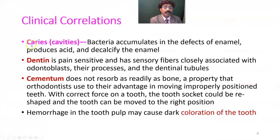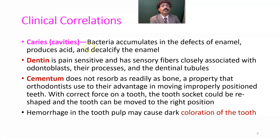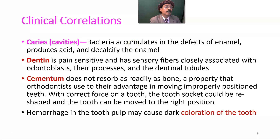Clinical correlation — Caries: Caries occurs when there is a crack in the enamel; bacteria accumulate in the defect, produce acid, and decalcify the enamel. It can be prevented by using fluoride-containing toothpaste or fluoride gargling. Fluoride is also added to many municipal water supplies, which helps prevent bacterial acid decalcification of the teeth. Fluoride is beneficial for dental health.